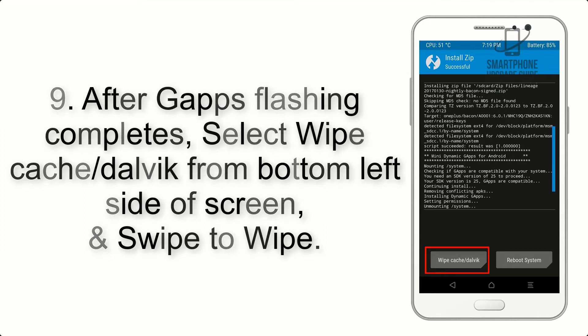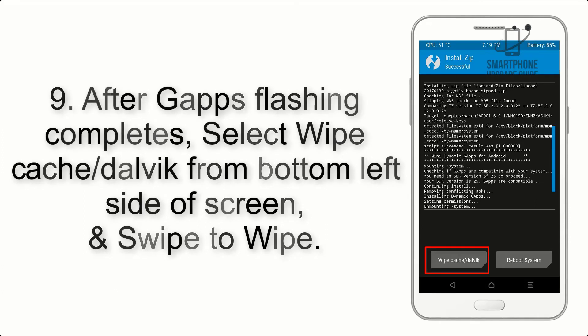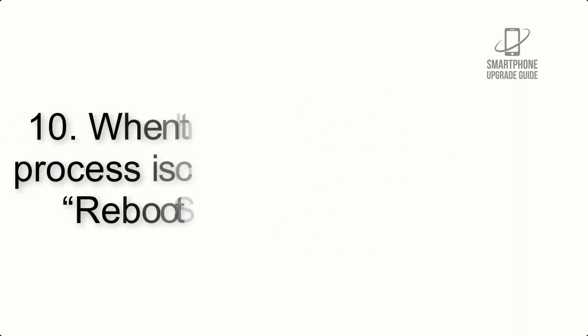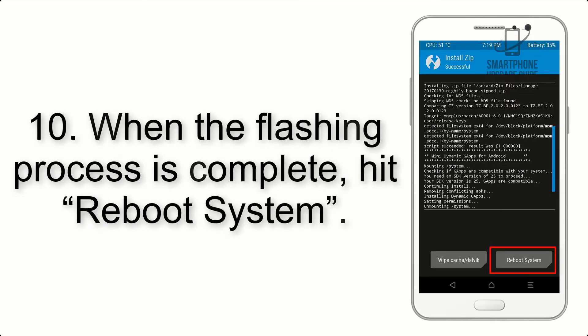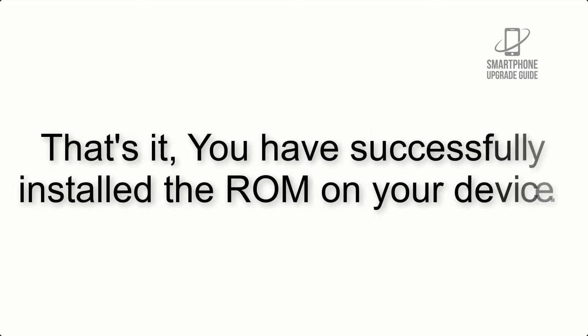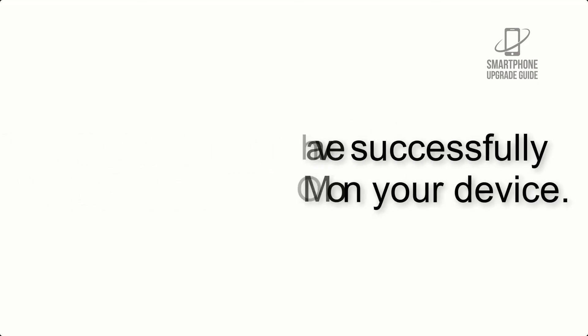Step 9: After GApps flashing completes, select Wipe Cache and Dalvik from the bottom left side of the screen and swipe to wipe. Step 10: When the flashing process is complete, hit Reboot System. That's it — you have successfully installed the ROM on your device.